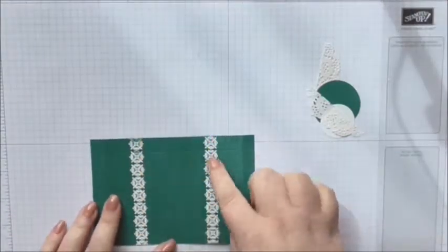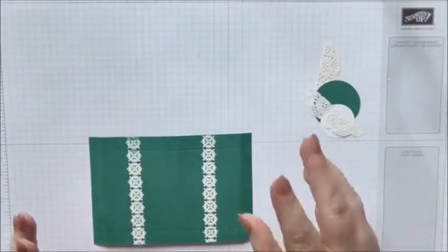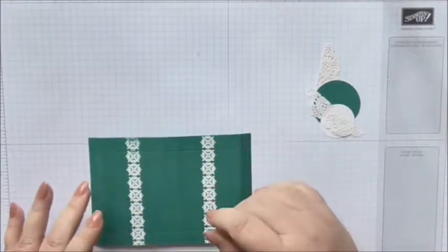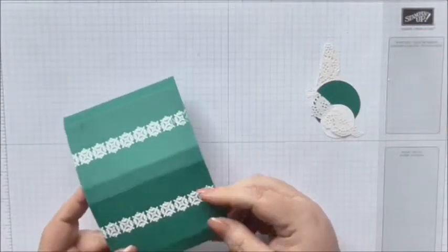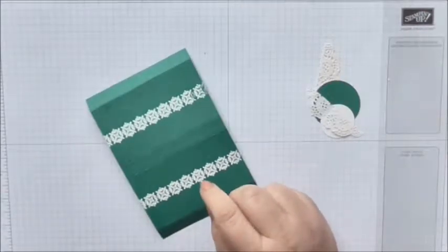And then what I did, I just went ahead and used Versamark, used my embossing buddy, Versamark, and some white embossing powder and then heat embossed it with my heat tool to just get this pattern.